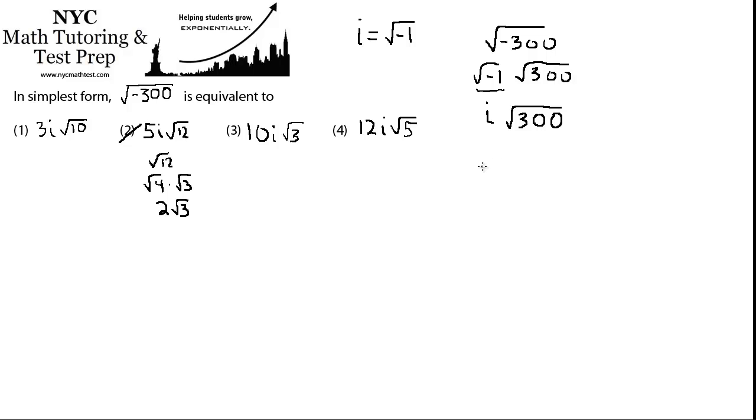Now, if you don't get the biggest one the first time, you can do this multiple times. But the first one that comes to mind for me is 100. I know 100 is a perfect square, and it goes in evenly to 300. So why not separate this into square root of 100 times square root of 3? So we still have to carry the i. And now we have square root of 100 times the square root of 3.